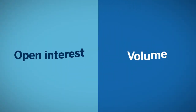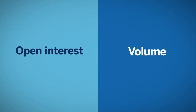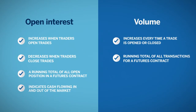Open interest and volume are related concepts. One key difference is that volume counts all the contracts that have been traded, while open interest is a total of contracts that remain open in the market. Traders can think of open interest as the cash flowing to the market — as open interest increases, more money is moving into the futures contract, and as open interest declines, money is moving out of the futures contract.